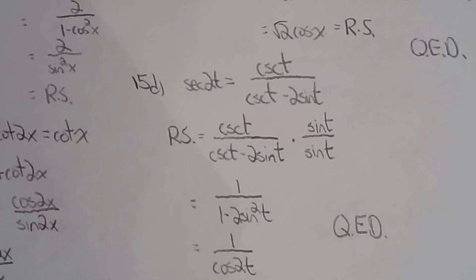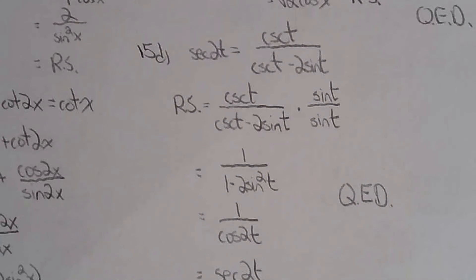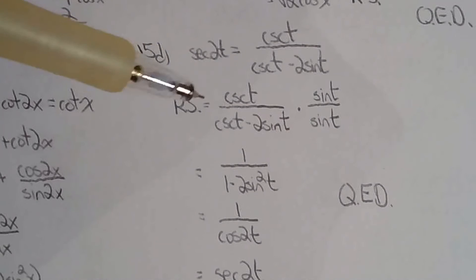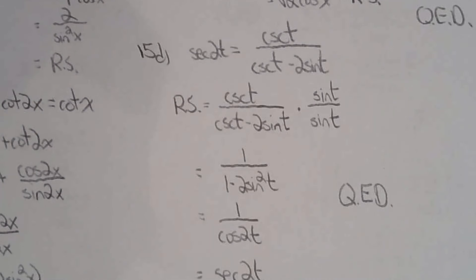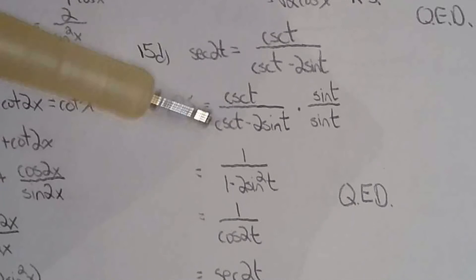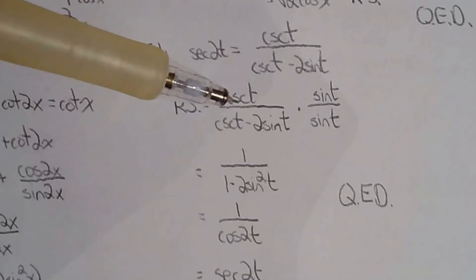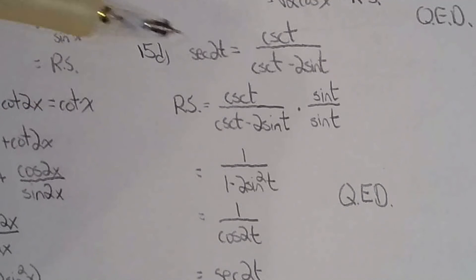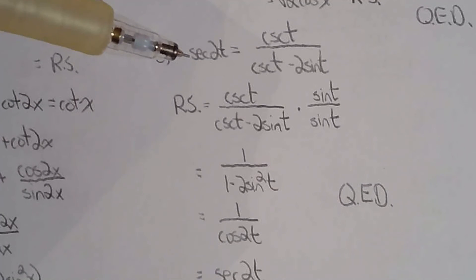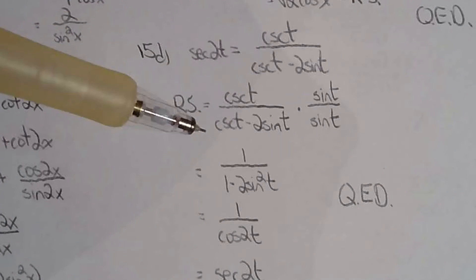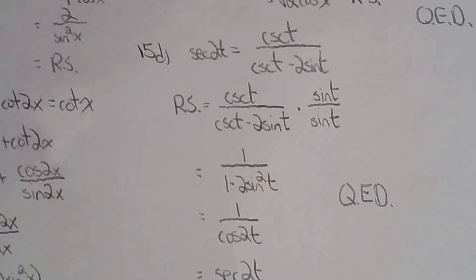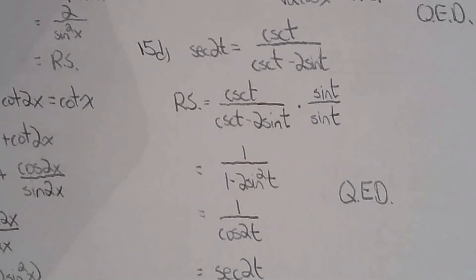For 15d, I took the right side and multiplied numerator and denominator by sine t, because cosecant and sine are reciprocals — multiplying them gives one. I wanted a one in the numerator because the left side is simply secant 2t. My strategy is always to be as efficient as possible, though there are other valid approaches.